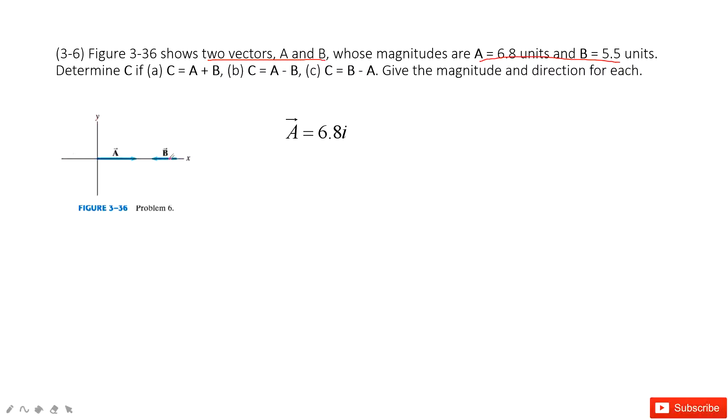There we have a similar picture. They tell us that A is pointing to the positive x-direction, and B is pointing to the negative x-direction. So this is i, this is j.